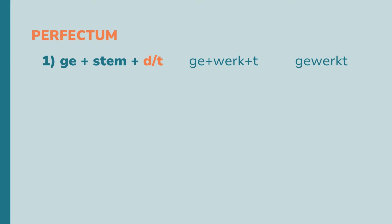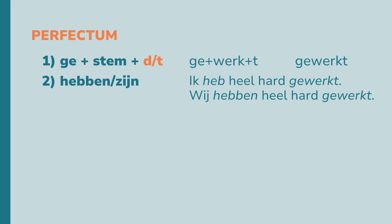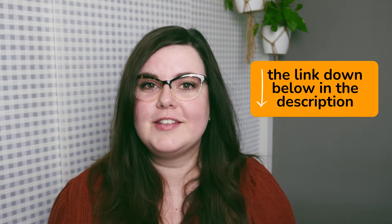And how about the perfectum? The perfectum is ge + stem + d or t. So in the example of 'werken,' it's ge + werk + t: 'gewerkt.' You also need a conjugated form of 'hebben' or 'zijn': 'Ik heb heel hard gewerkt.' 'Wij hebben heel hard gewerkt.' When to use 'hebben' or 'zijn' as an auxiliary verb, I will show you in another video — you can find the link down below in the description.